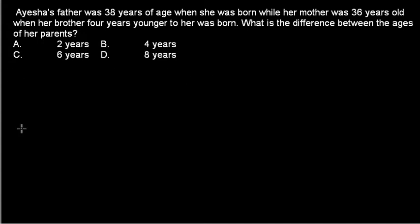We don't need to assume anything in this case because everything is provided — the ages are provided directly. So you don't need to assume anything. That's a good thing. So let's just solve it.